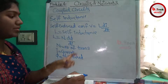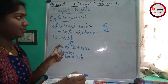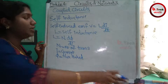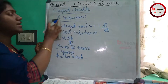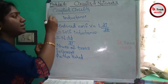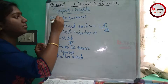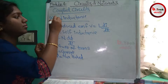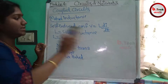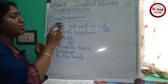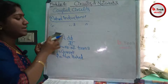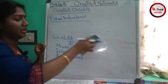We can see a single coil. Now, in the case of different coils, we represent self-inductance as mutual inductance. Mutual inductance is represented by the capital letter M.